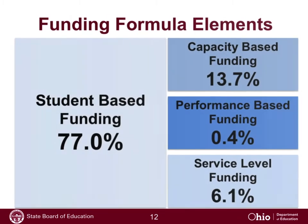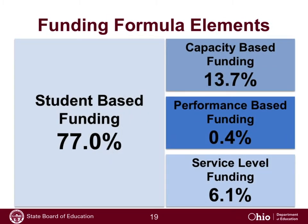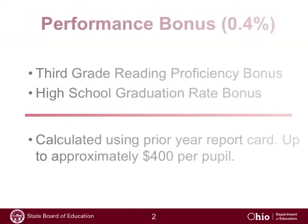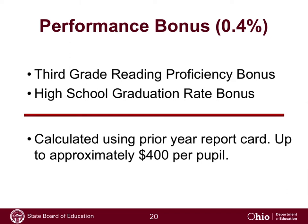The last part is performance-related components, which is about 0.4% of overall funding. There are two areas with a performance bonus: the third-grade reading proficiency bonus and the high school graduation rate bonus. Using the prior year report card, these can generate up to about $400 per pupil. Notably, this is the first time the funding formula has reflected individual student-level performance — previous academic performance bonuses were based on district-level performance, but these two elements generate dollars based on individual student performance in third-grade reading and high school graduation.